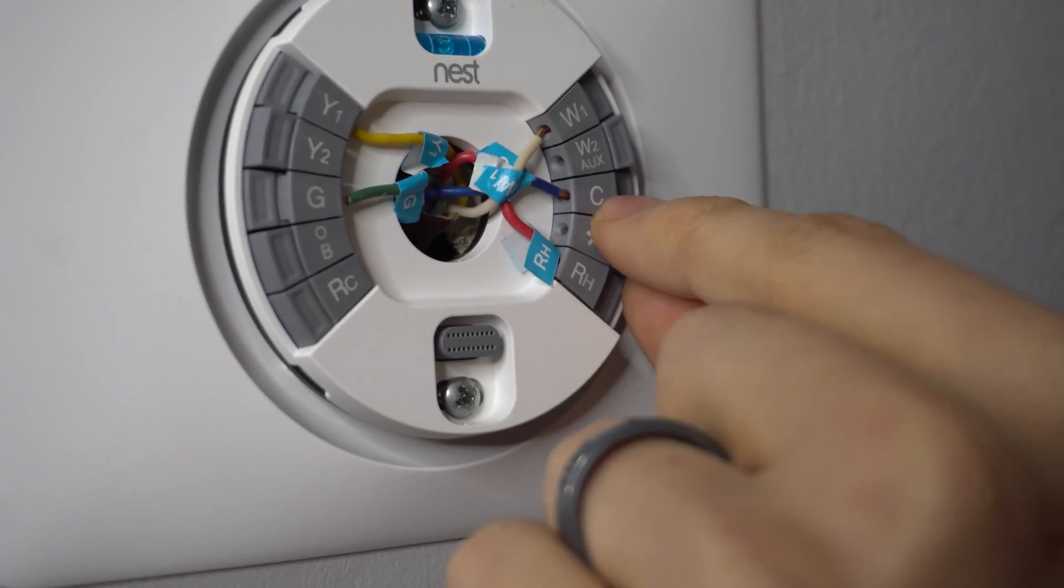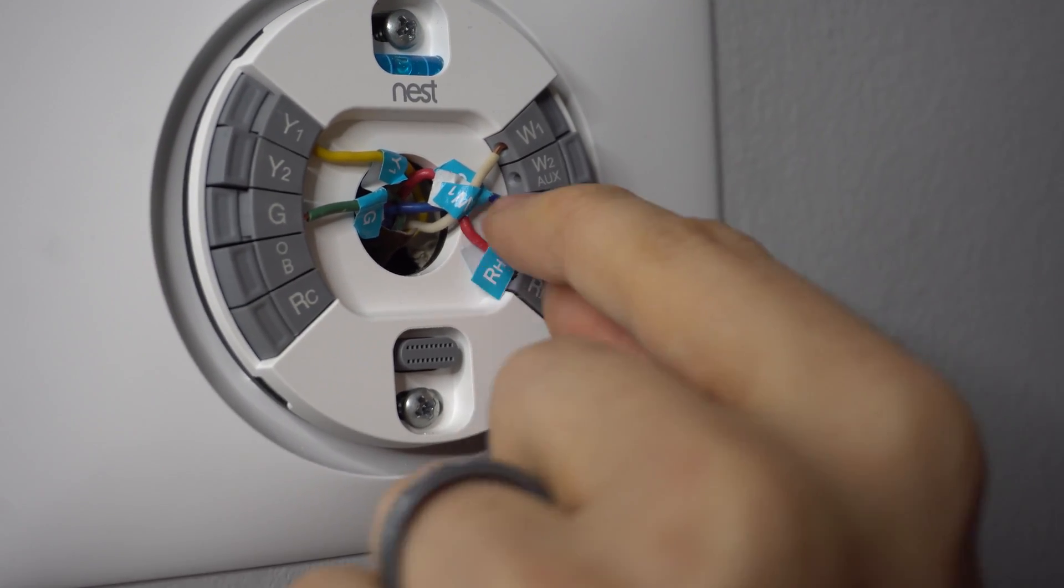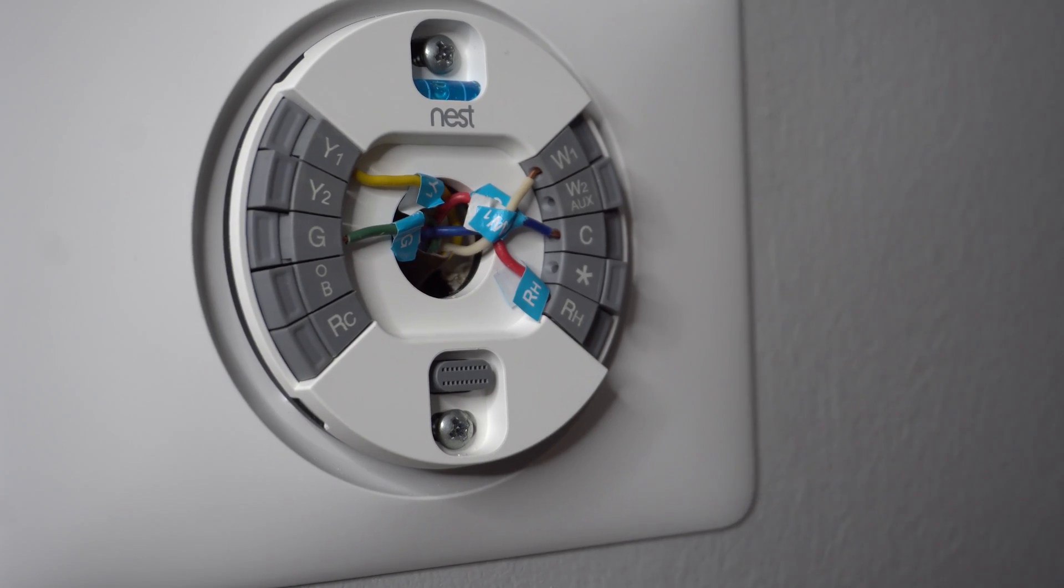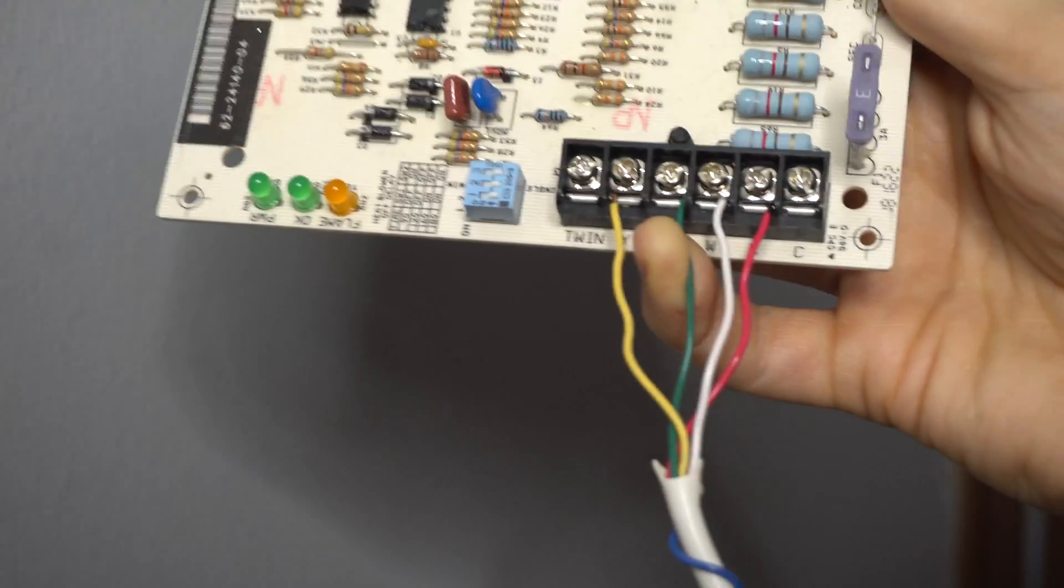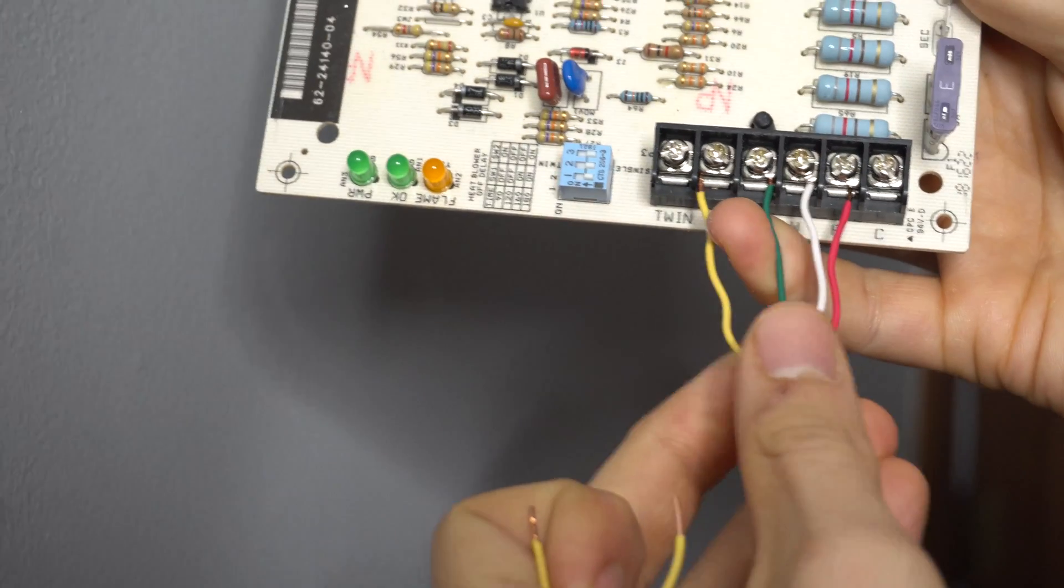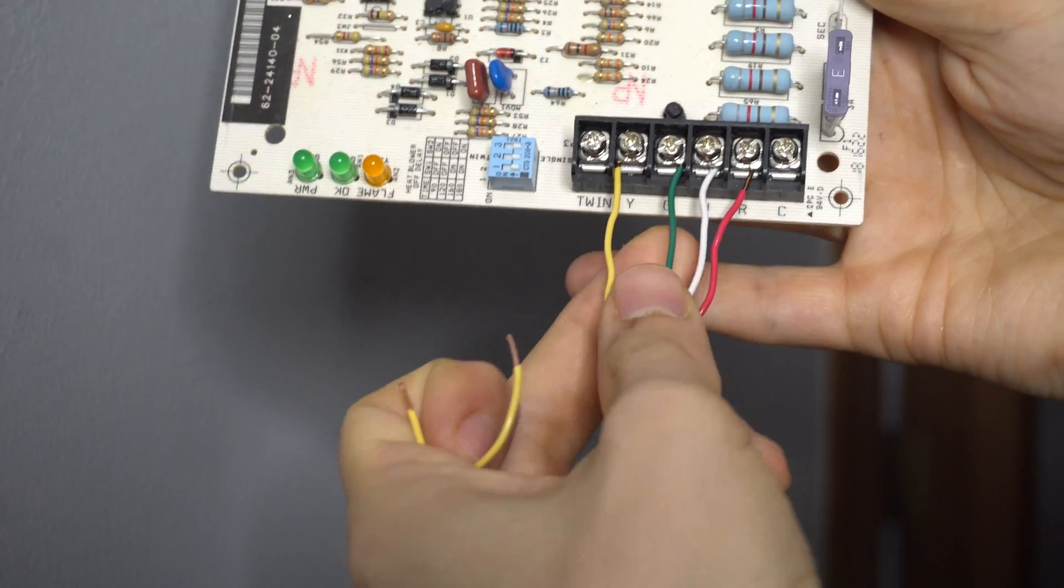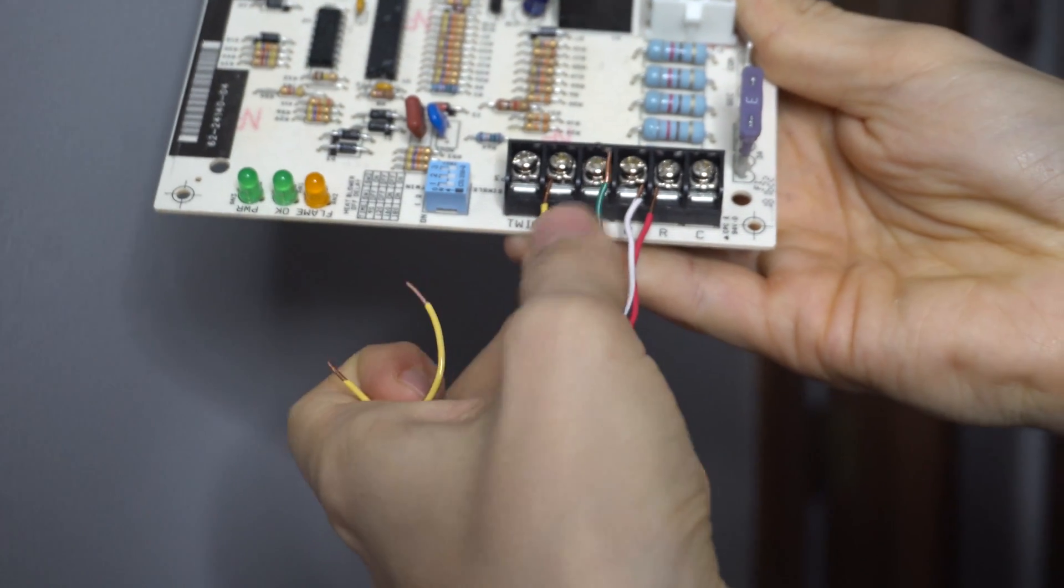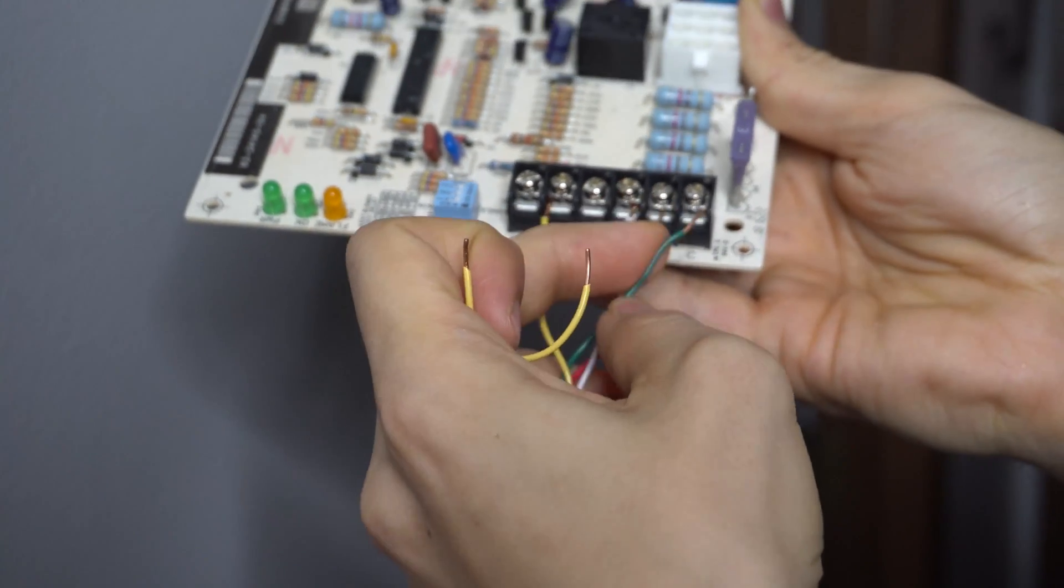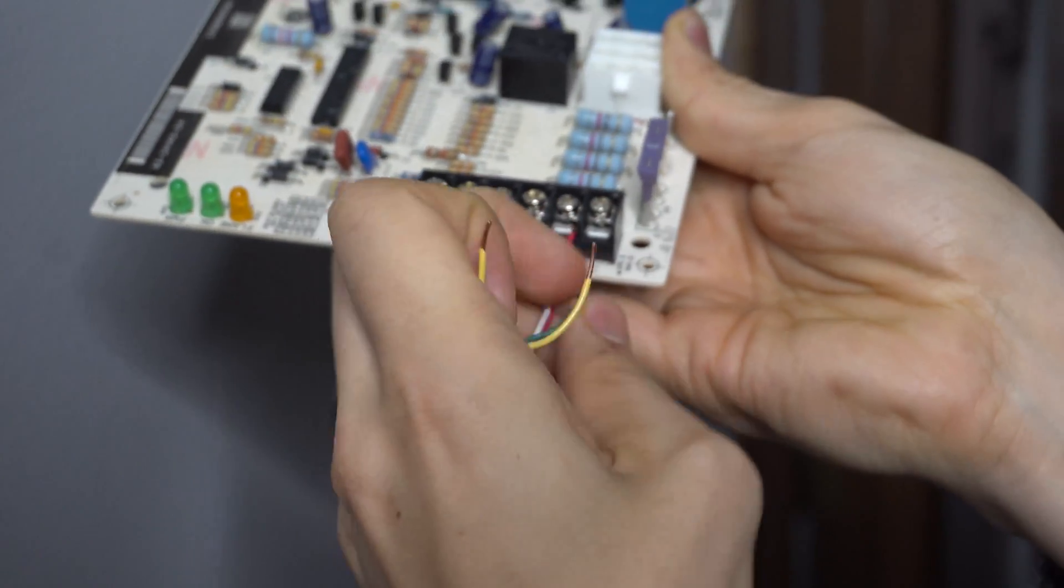So you would take the G and put it into the C, if you don't already have a C. And then you would go down to your furnace control board. So back to our board again. And you have these four connections, right? What you would do is, of course, pull out the G and plug it into the C, because now we're going to use that wire as a common.